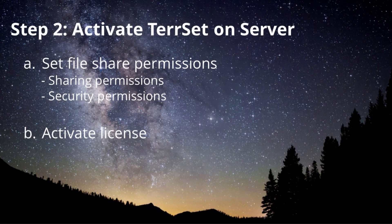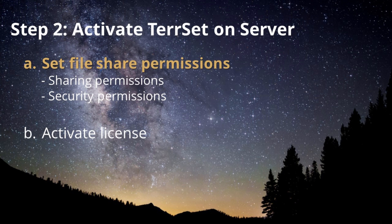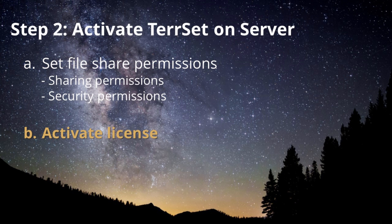The next step is to activate your Tearset license on the server. This step can also be broken down into several sub-steps. First, you must set permissions on the Tearset license folder. These permissions will determine who can access the license file and must be specified correctly in order to allow client machines access to the Tearset license. Then you can go on to activate the license on the server.